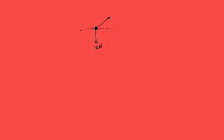Let's consider some mass here. There's a force of 10 newtons in the vertical, and then we put the horizontal here, and we have a force T in this direction at an angle of 25 degrees.